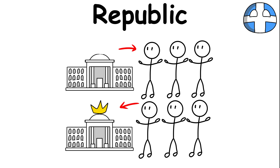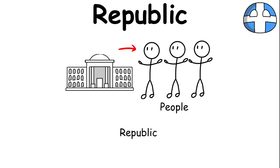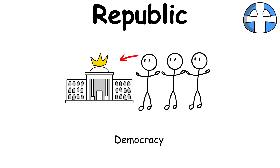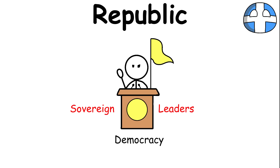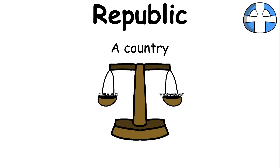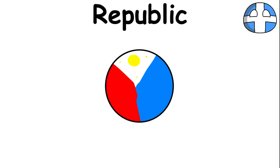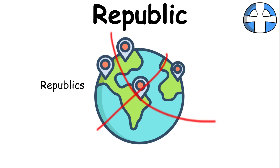There are notable differences between a republic and a democracy. In a republic, the people own the state. On the other hand, in a pure democracy, the people don't own the state but are the sovereign leaders of the nation. A country can be both a republic and a democracy simultaneously. For example, the Philippines is both a republic and a democracy, but not all countries are republics and democracies at the same time.